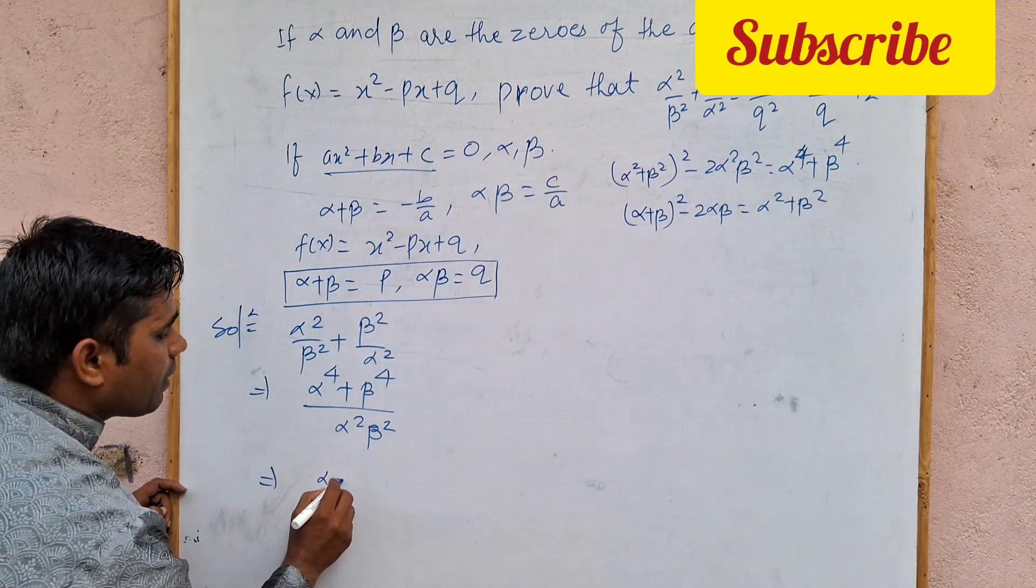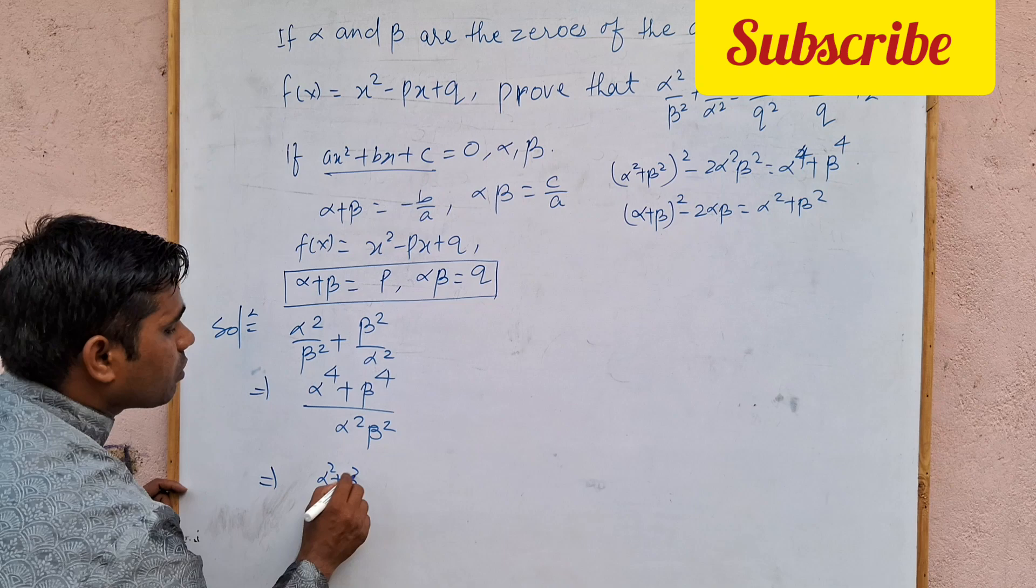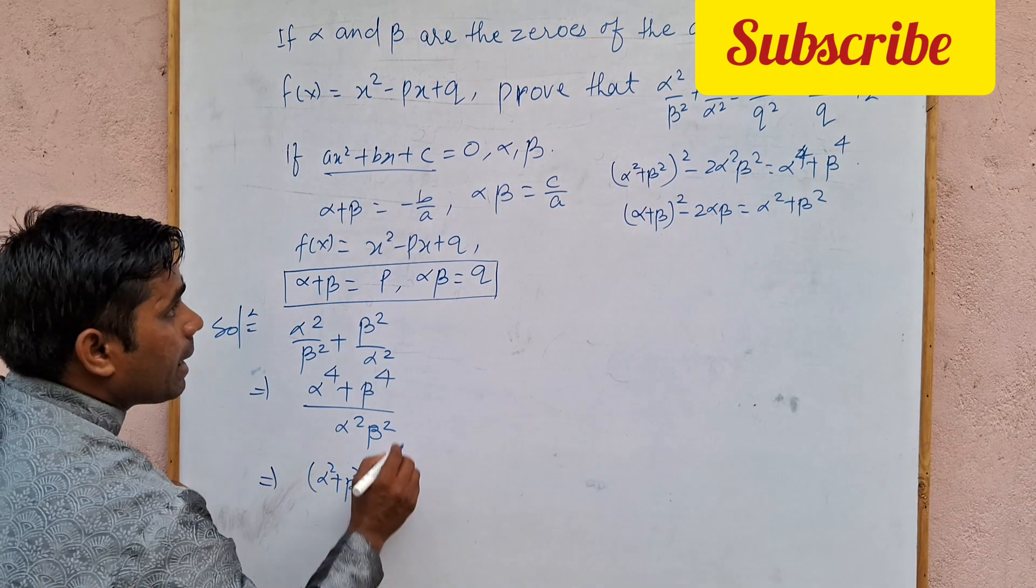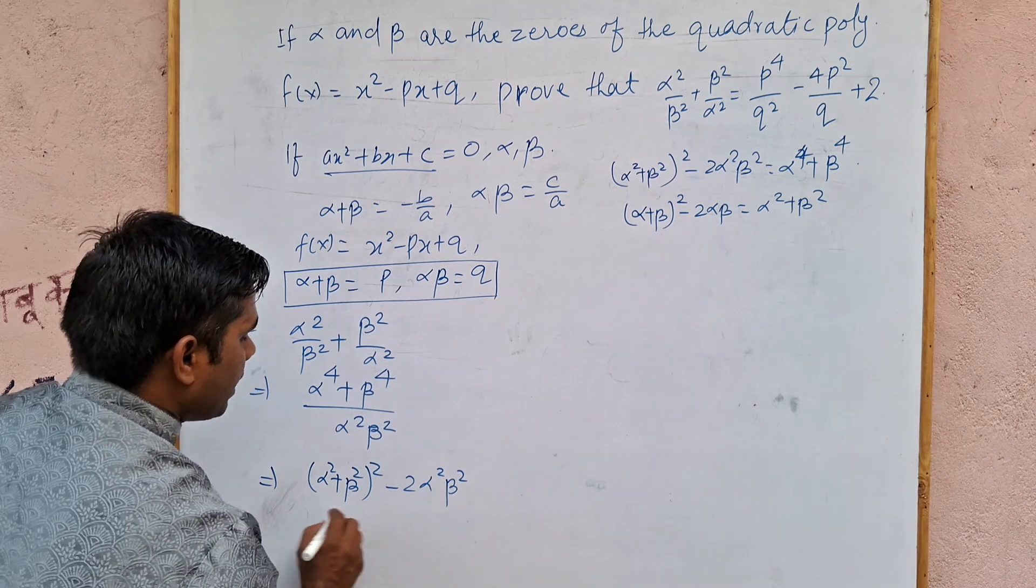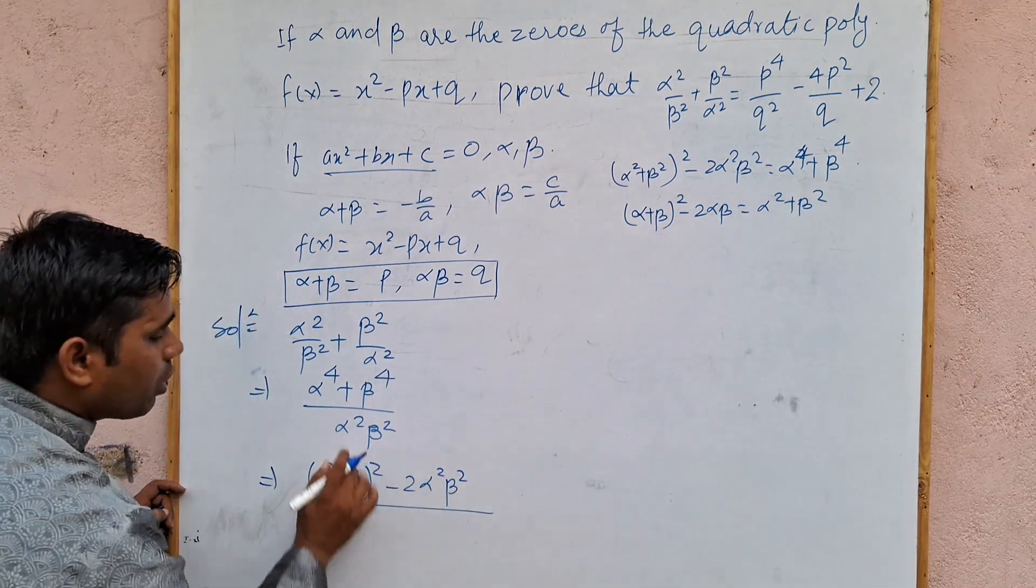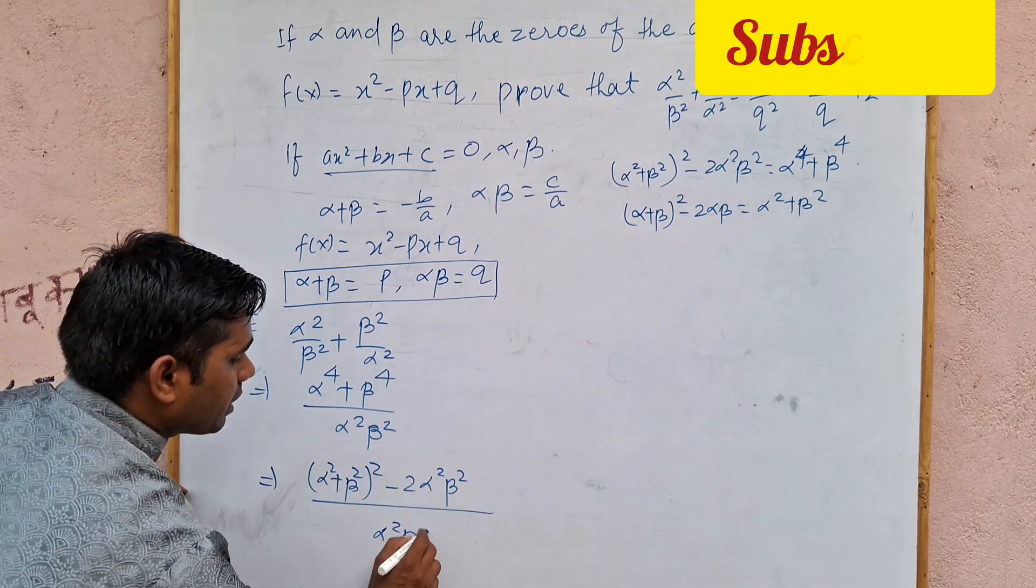Alpha plus beta, alpha square, beta square, whole square. Now, minus 2 alpha square, beta square. Now, this is the upper part. And here, what do we do? Alpha square, beta square.